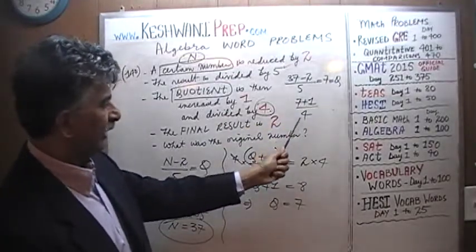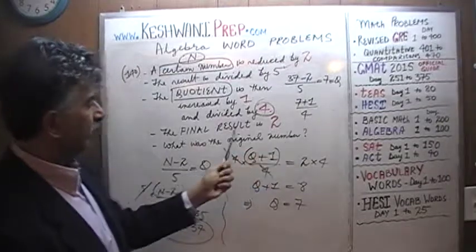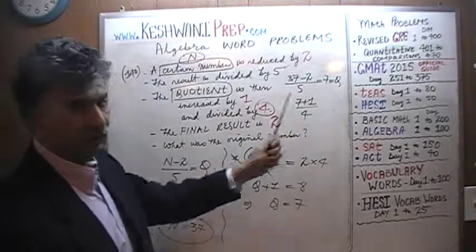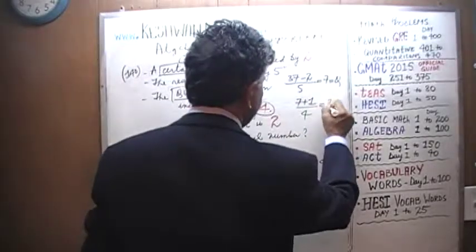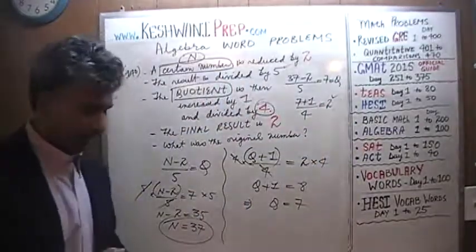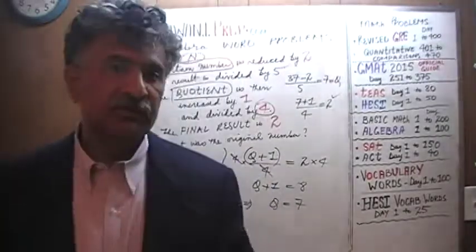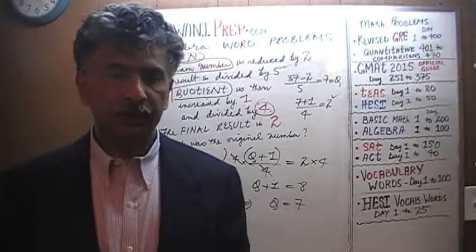And when we do that, the final result will be 2. So is 8 divided by 4 equal to 2? The answer is yes, of course. 8 divided by 4 does indeed equal 2, which means our answer is correct. Bye now.